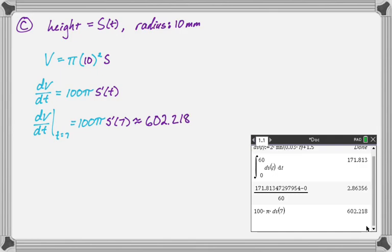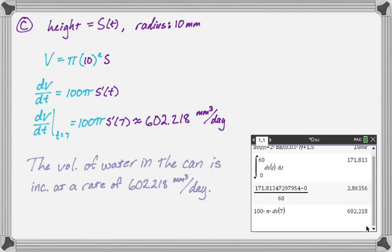I get approximately 602.218. And then what are we doing here? Volume. So height is measured in millimeters, radius is in millimeters. Volume is in millimeters cubed. So it's millimeters cubed per time is measured in days, so millimeters cubed per day. And what am I supposed to do? Indicate units of measure. The volume of water in the can is increasing at a rate of 602.218 millimeters cubed per day. I don't actually think you need to do that on this. Just get the answer. I always think it's good to explain your answer if you can.